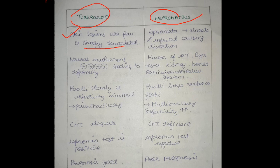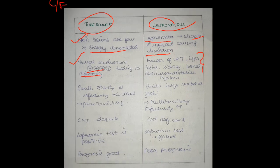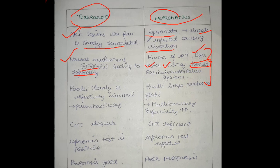In lepromatous type, we have plaques and nodules, and this nodule is called leproma. Leproma can undergo ulceration and secondary infection. Lesions are diffuse. Nerve involvement in tuberculoid type is very important and very common, leading to deformity. There is more cranial nerve involvement, which is why we see facial nerve palsy. In lepromatous type, other system involvement is very common. We can see changes in the kidney, eyes, gynecomastia, testicular atrophy, and bone involvement. Distal phalanges involvement is very common, so patients have disabilities.